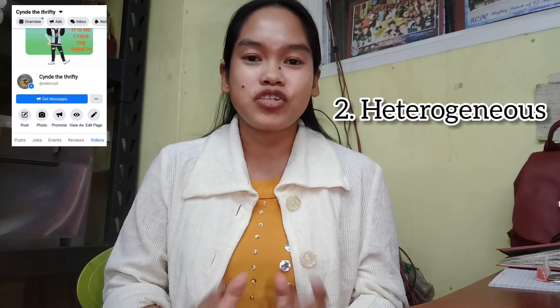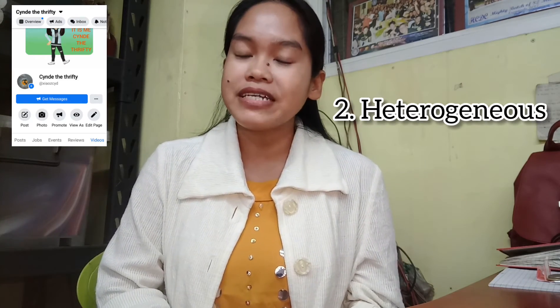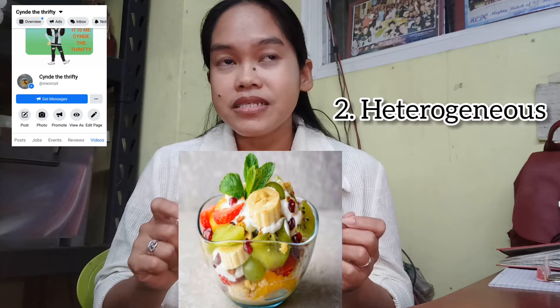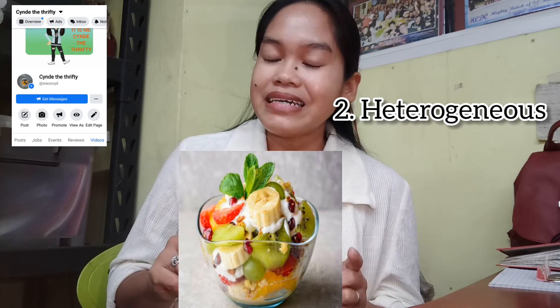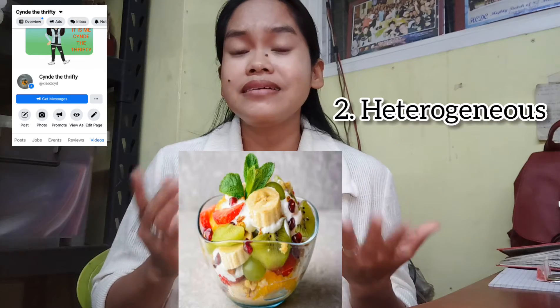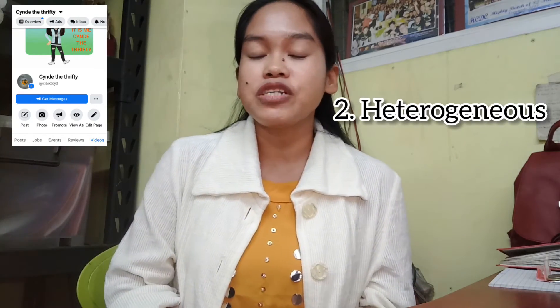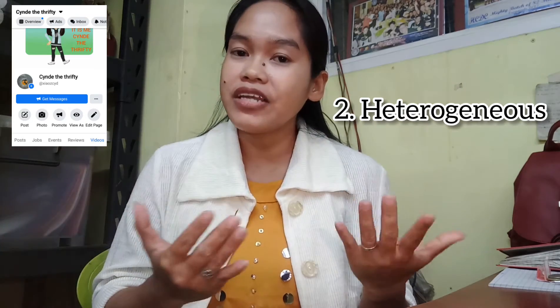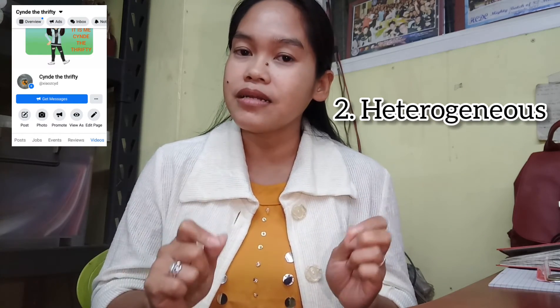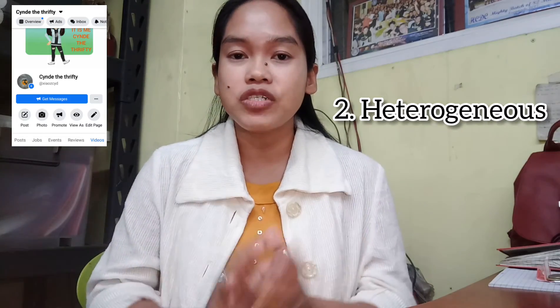Now let's go to our second kind of mixture: heterogeneous mixture. This mixture has a non-uniform composition. Compared to homogeneous mixture, in a heterogeneous mixture you can identify and you can see its particles. For example, when you make a fruit salad, you mix different fruits together but you can still identify each one — this is apple, this is banana, this is orange. You can still see and identify the types of fruits because they have a non-uniform composition.